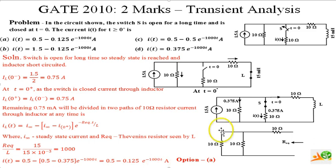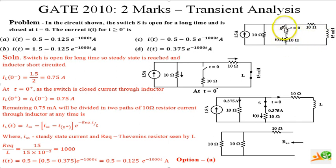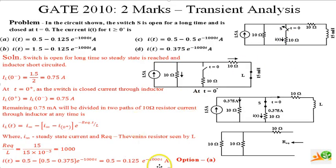Note the difference: the equation was initially derived for the inductor current, but we are finding the current i(t) in that specific branch, not the inductor part alone. That accounts for the difference in the final expression. Thank you.